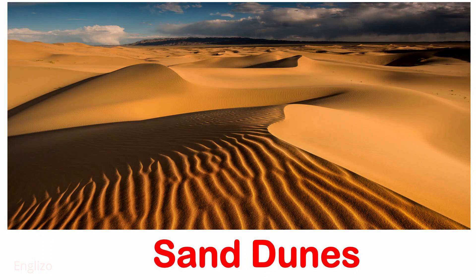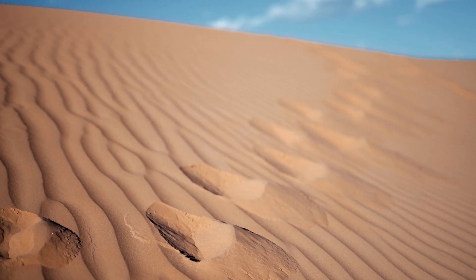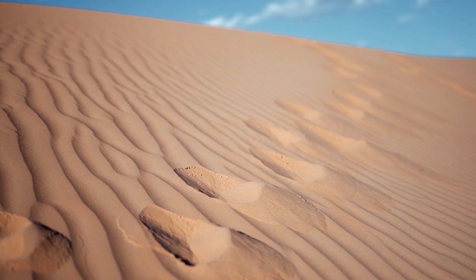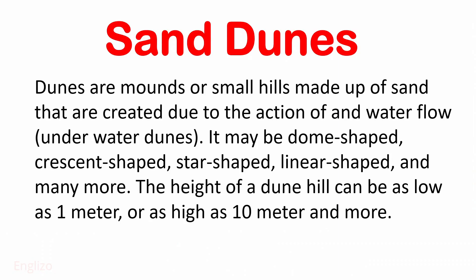Next is Sand Dunes. Dunes are mountains or small hills made up of sand that are created due to the action of water flow. They may be dome shaped, crescent shaped, star shaped, linear shaped, and many more. The height of a dune hill can be as low as 1 meter or as high as 10 meters and more.